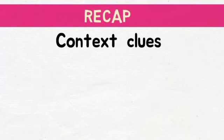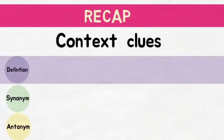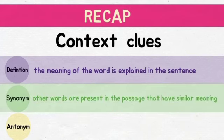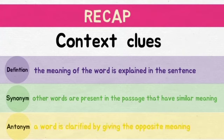Let's have a quick recap before we end our lesson. When you use clues in a sentence or a passage to figure out the meaning of a new word, you are using context clues. There are many different types of context clues; for now, we have discussed three. In the definition clue, the word's meaning is explained in the sentence. In the synonym clue, other words present in the passage have a similar meaning. In the antonym clue, a word is clarified by giving the opposite meaning.